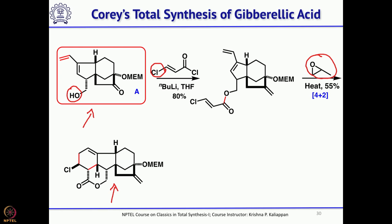How many rings are formed? Two more rings are formed — normally a dienophile reaction gives one ring, but when it is an intramolecular reaction, you can get more than one ring. So you could construct two rings, rings 1 and 2, using this key 4+2 cycloaddition reaction.